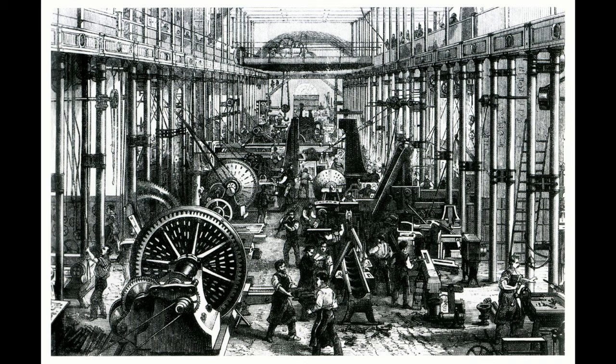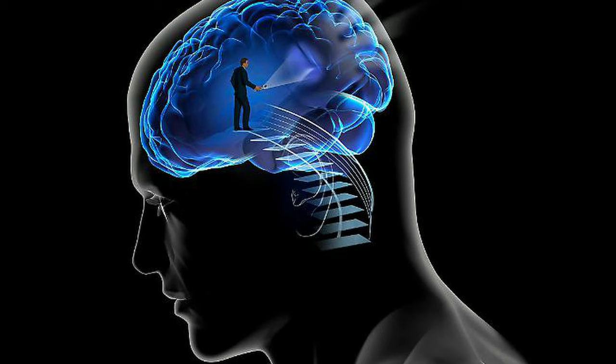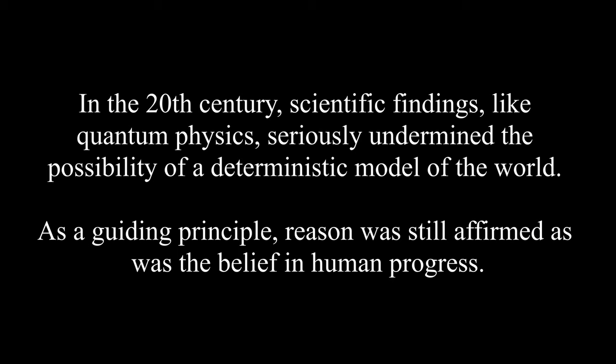By the 19th century, the Enlightenment's impact was assessed by intellectuals and artists and it was reaffirmed. But some of the ideals of the Enlightenment, like certainty, were jettisoned. In the 20th century, scientific findings like quantum physics seriously undermined the possibility of a deterministic model of the world.